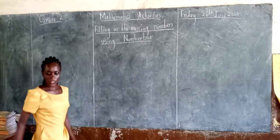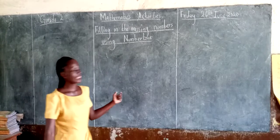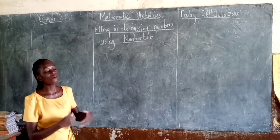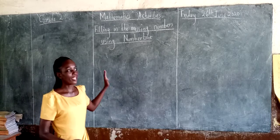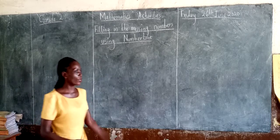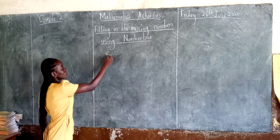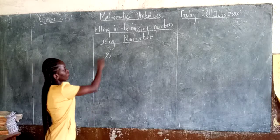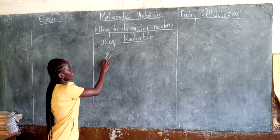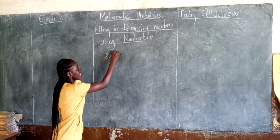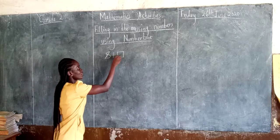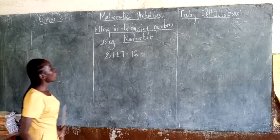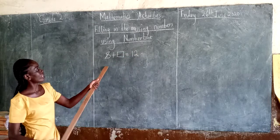I want us to do an example just to remind ourselves of what we learned during our last lesson. For example: 8 plus dash is equal to 12. Can you remember how we did this question?